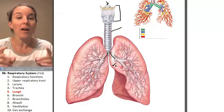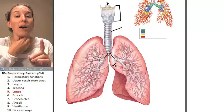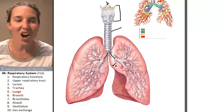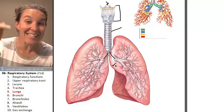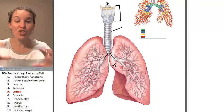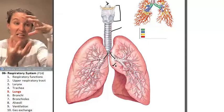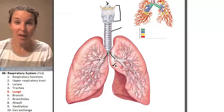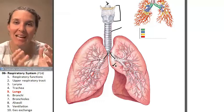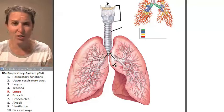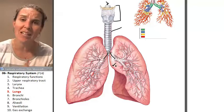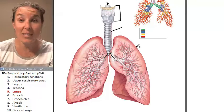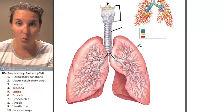Those are bronchi. The bronchi are contained in the lungs. You could take a lung out and cut it all up, and inside that lung you're going to have all sorts of structures. And that's where we're going next.